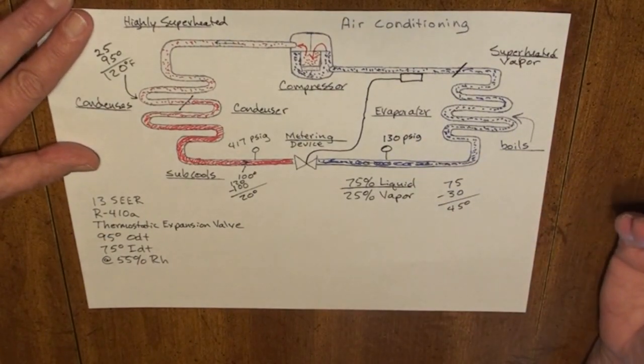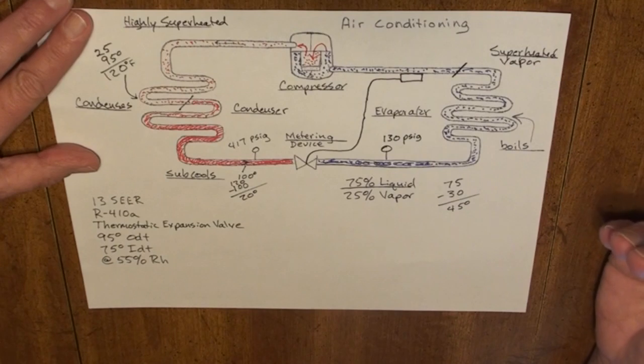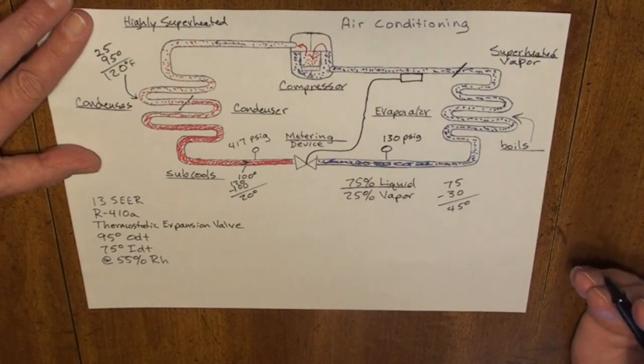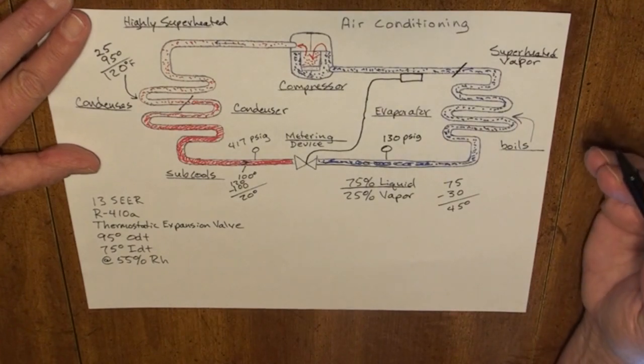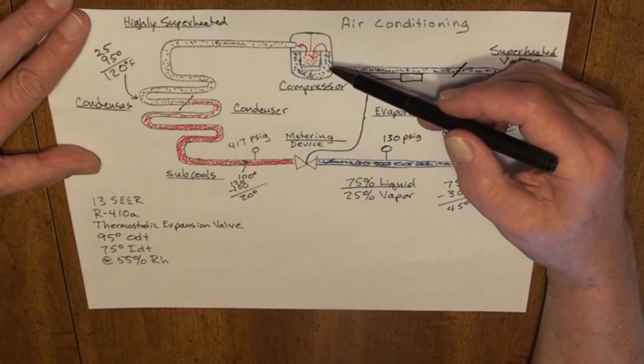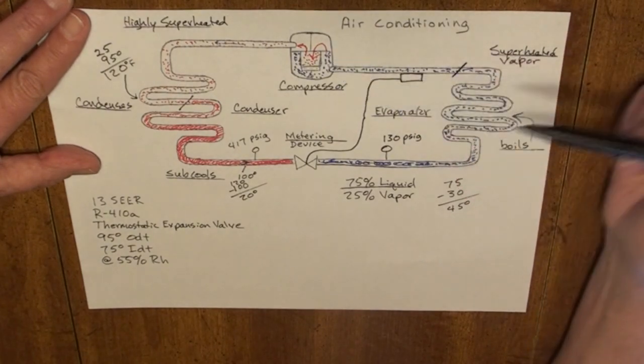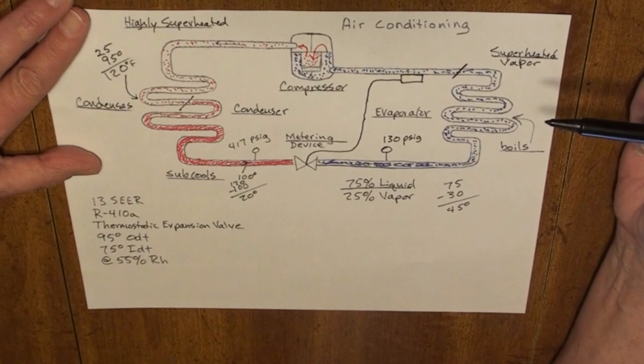Some of y'all are asking at this point, how can this be more efficient? How can this operate at these higher pressures, use less amperage, and be more efficient? It's because of the vapor density of the refrigerant. It's not taking as much to compress this refrigerant as it would the R22, which is much more dense.